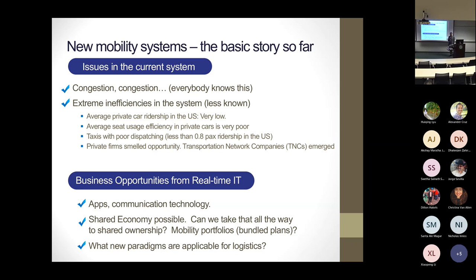New mobility systems — we know congestion is always a problem, but we don't think as much about the extreme inefficiencies in our system. Average private car ridership in the US is very low, around 1.1, which is pretty bad. Average seat usage efficiency is even worse. Taxis with poor dispatching had less than 0.8 average ridership, meaning taxis were traditionally doing more deadheading than traveling with people.